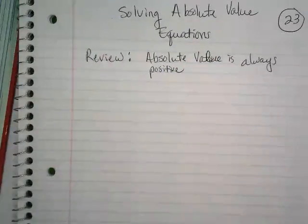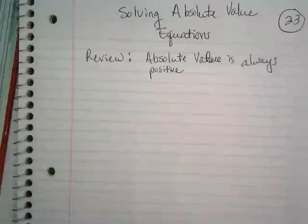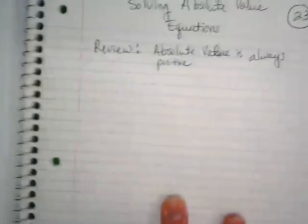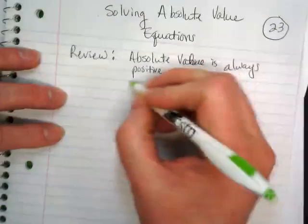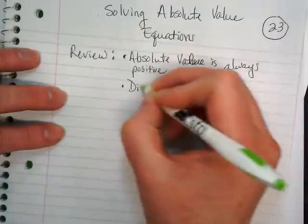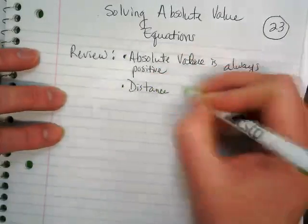Who remembers why absolute value is always positive? Wait, go ahead. Is this like, you know, how far the number is from zero? Yeah, it's because it is the distance. Let's make these two bullet points, from zero.